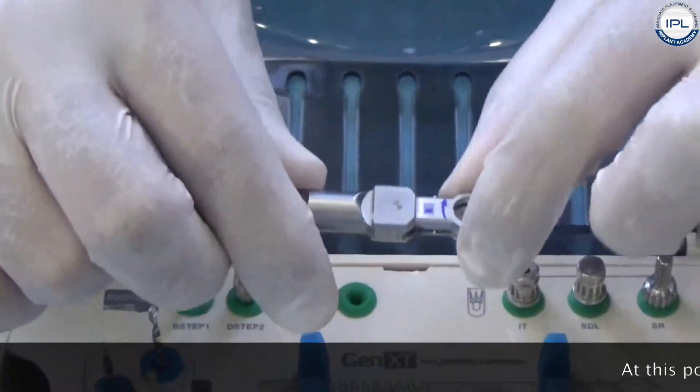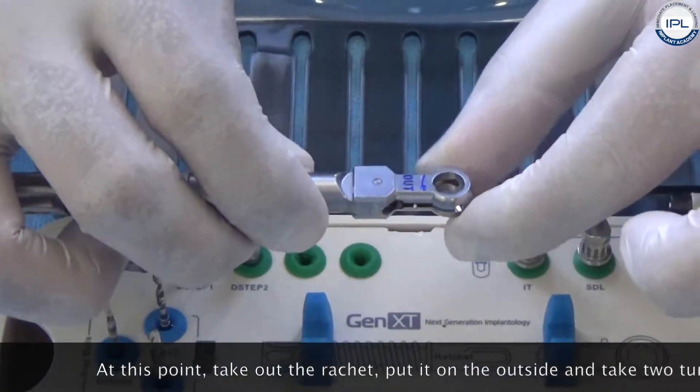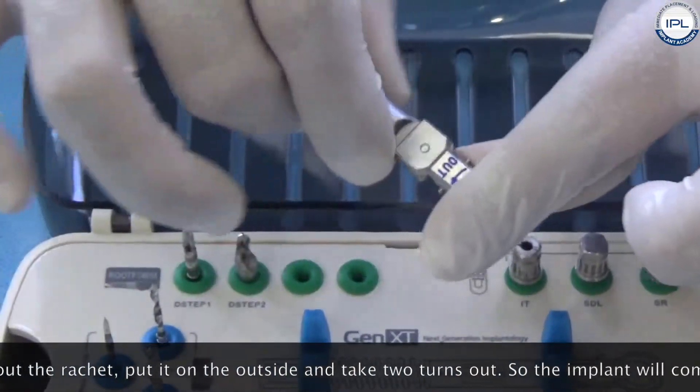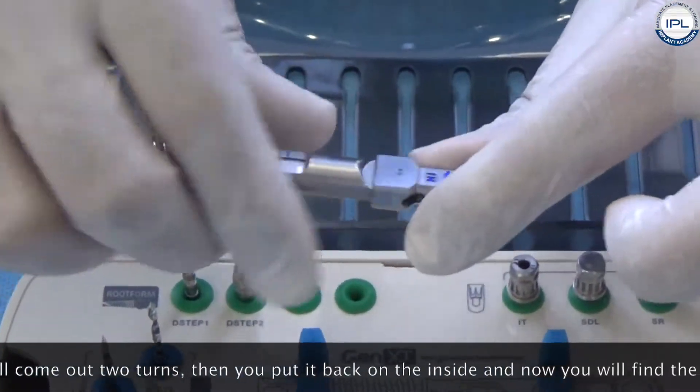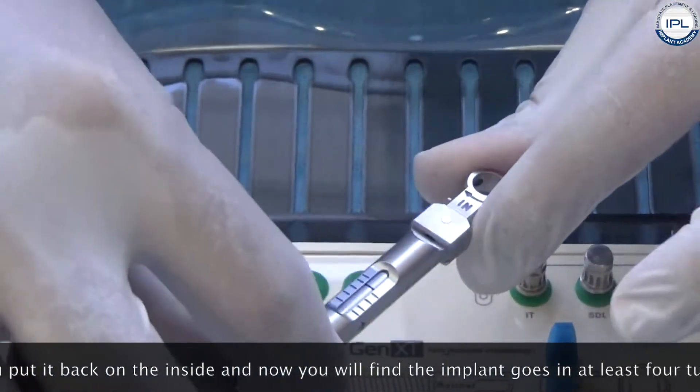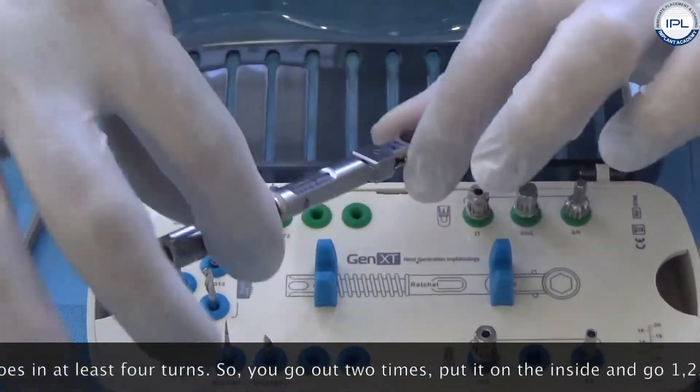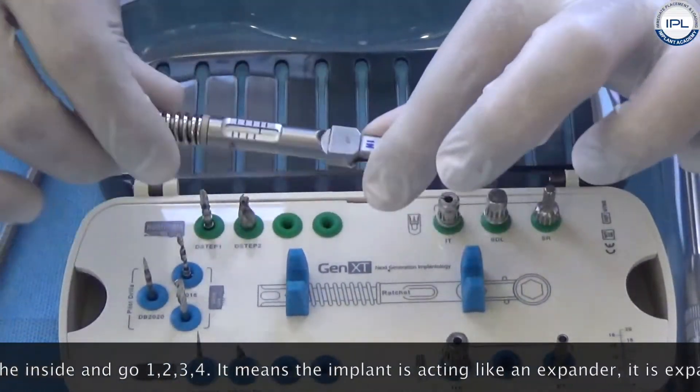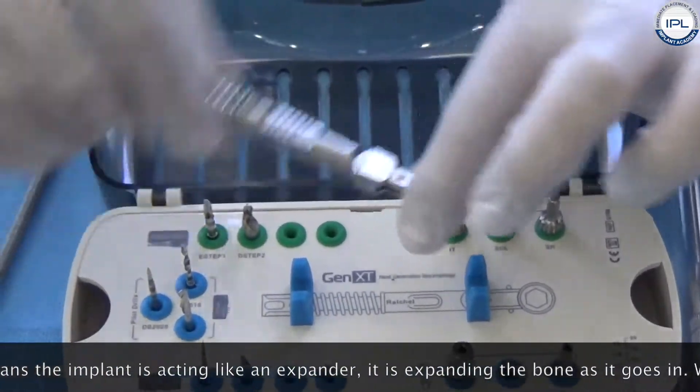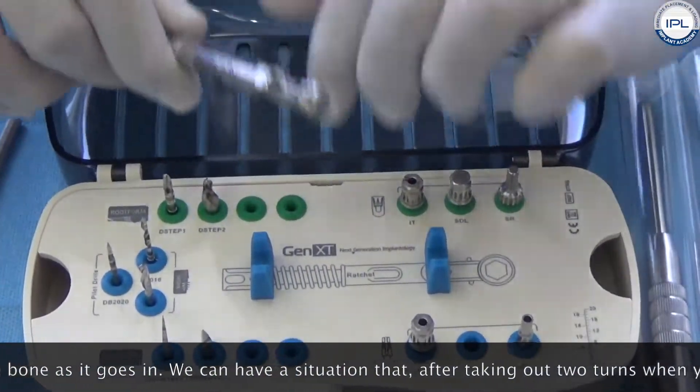I recommend at this point that you take out the ratchet, put it on the outside and take two turns out. So the implant will come out two turns, then you put it back on the inside and now you will find that the implant will go in at least four turns. So you go out two times, then you put it on the inside and go one, two, three, four. That means this implant is now acting like an expander. It is expanding the bone as it goes in.